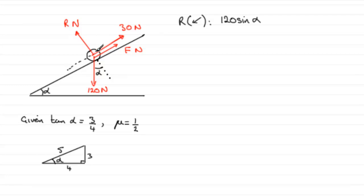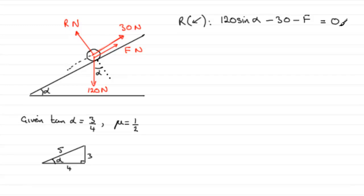Now these two forces — the 30 newtons and the F — act in the opposite direction to the direction we've got here. So they're going to be minus 30 minus F. This is the resultant force, and the particle is in equilibrium, so it's going to be equal to zero. To get F, all I need to do is add F to both sides, so we get F equals 120 sine alpha minus 30.